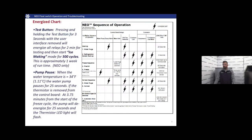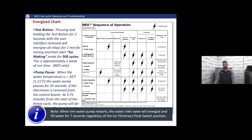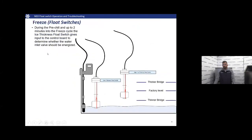This chart shows what the floats are doing throughout the sequence of operations. One thing that can throw people is that pump pause. We utilize the water trough thermistor to pause our pump and bring in fresh water. This is independent of the harvest float switch. So there are times you'll hear from people in the field: the ice thickness float is satisfied but we're still getting a fill. That's normal — that's in our programming. During pre-chill and up to two minutes into the freeze cycle, our ice thickness float is communicating with the board to tell us whether we need water or not. When that float is down during the pre-chill, that sends the signal to the board to fill up with water and the water inlet valve should be energized.